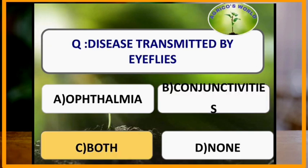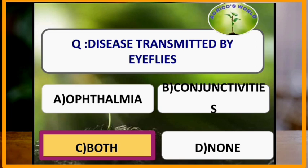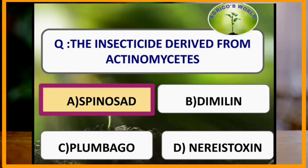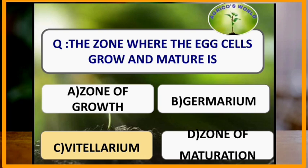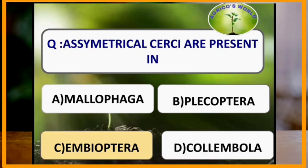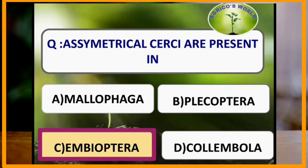Diseases transmitted by eye flies are ophthalmia and conjunctivitis. The insecticide derived from actinomycetes is spinosad. The zone where egg cells grow and mature is called the vitellarium; the germarium is the egg chamber containing primordial germ cells. Asymmetrical cerci are present in the order Embioptera.